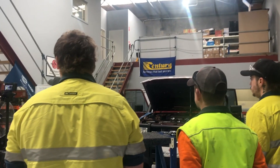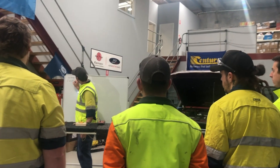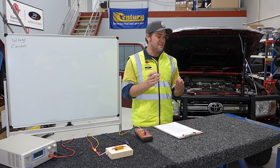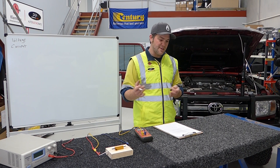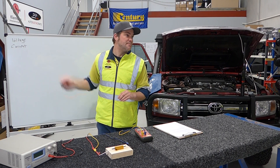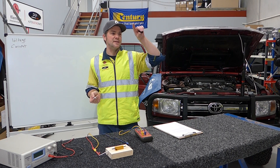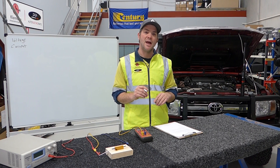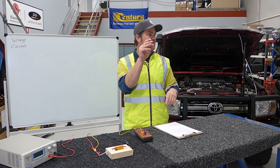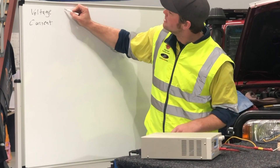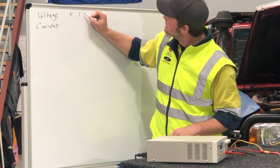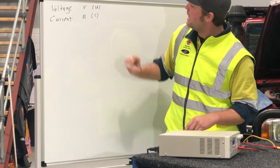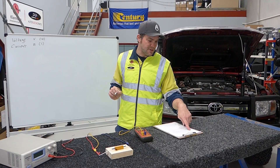The second one is current. Current is the same as the flow of water — it is the flow of electrons, very equivalent to it. Voltage we measure in volts and the symbol for it is U when we use equations. Current is measured in amps or ampere and the symbol for equations is I.